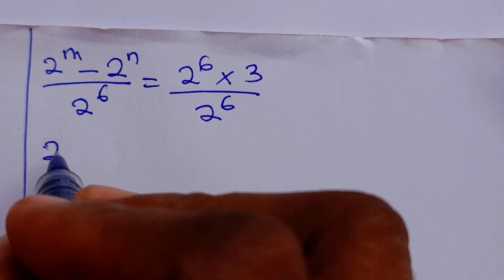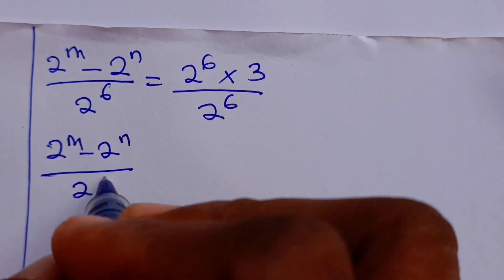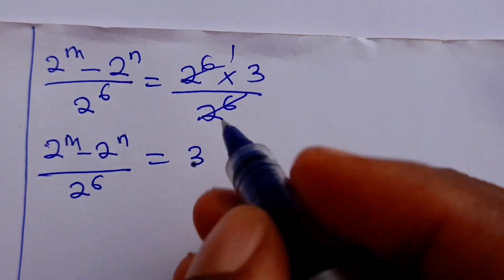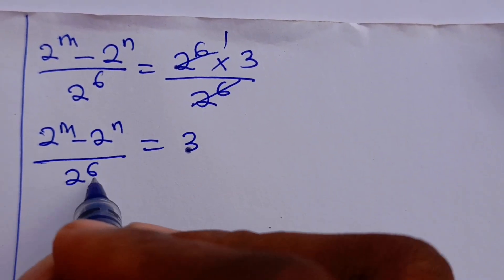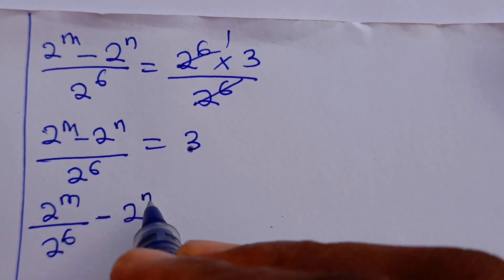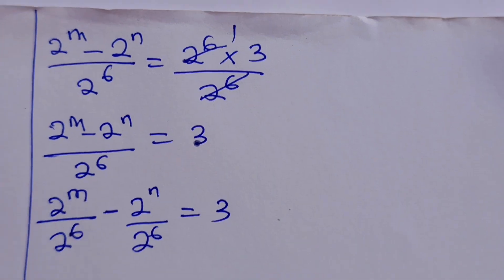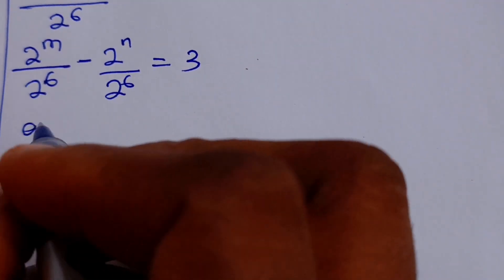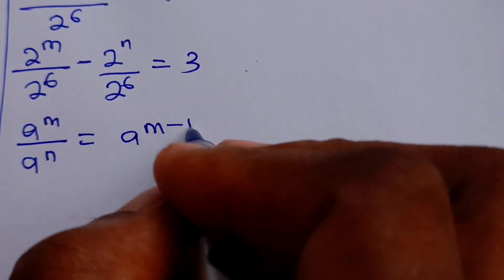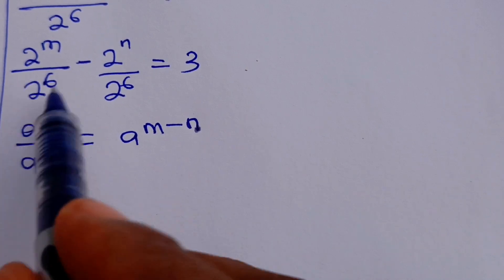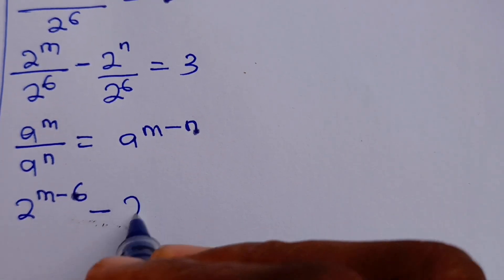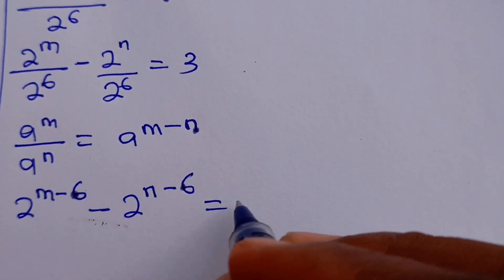We can see that 2 to the power of M minus 2 to the power of N divided by 2 to the power of 6 equals 3, since 2 to the power of 6 divided by itself is 1. Remember that we can distribute this denominator for both terms. So we have 2 to the power of M divided by 2 to the power of 6, minus 2 to the power of N divided by 2 to the power of 6, is equal to 3. Using the quotient law — A to the power of M over A to the power of N equals A to the power of M minus N — we rewrite this as 2 to the power of M minus 6, minus 2 to the power of N minus 6, is equal to 3.